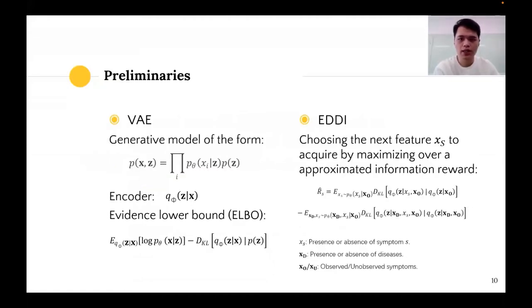I am going to present some necessary preliminaries about VAE and ADI. A VAE defines a generative model of the form in which the data X is generated from latent variables Z. P(Z) is a prior, for example a spherical Gaussian, and P_θ is presented as a neural network decoder with parameters θ to specify a simple likelihood like Bernoulli. A VAE uses another neural network with parameters φ as an encoder to produce a variational approximation of the posterior, i.e., Q_φ(Z|X). A VAE is trained by maximizing the evidence lower bound.